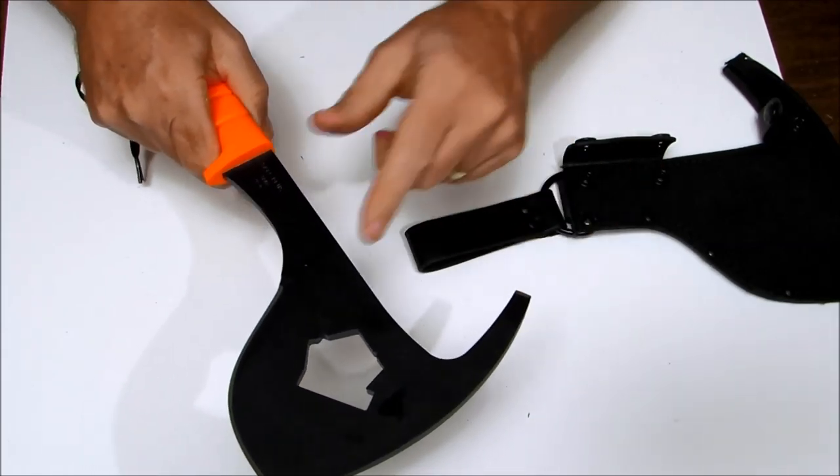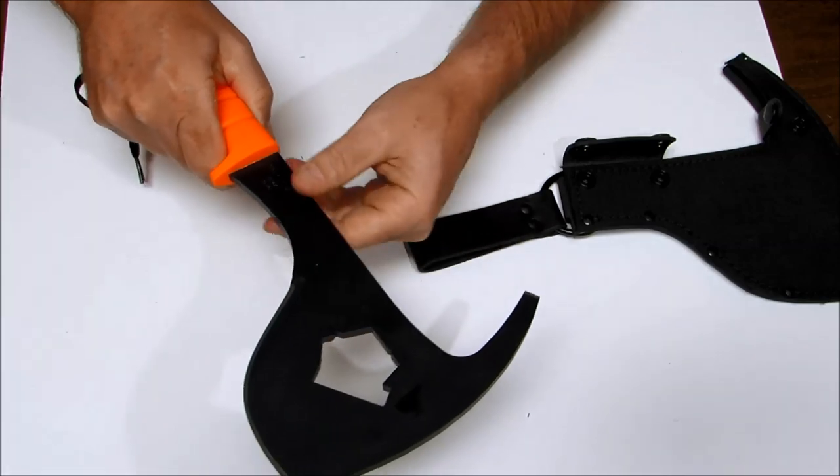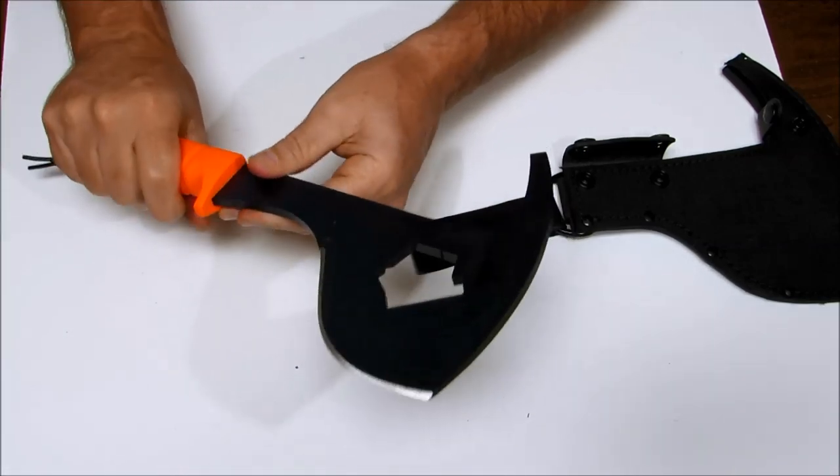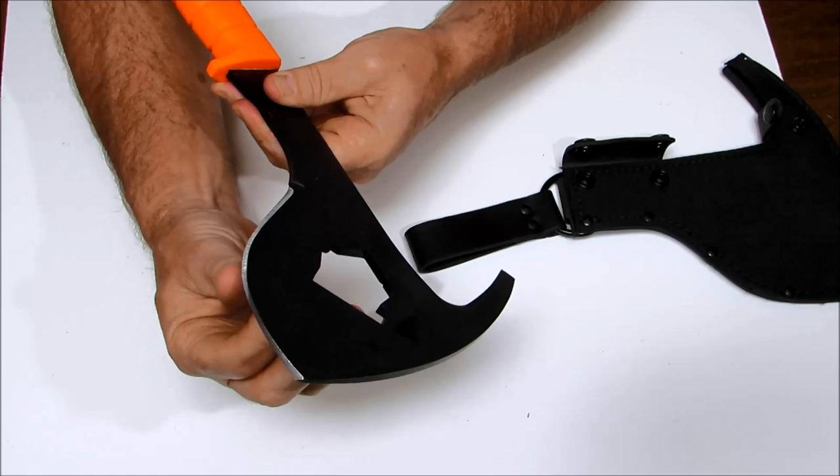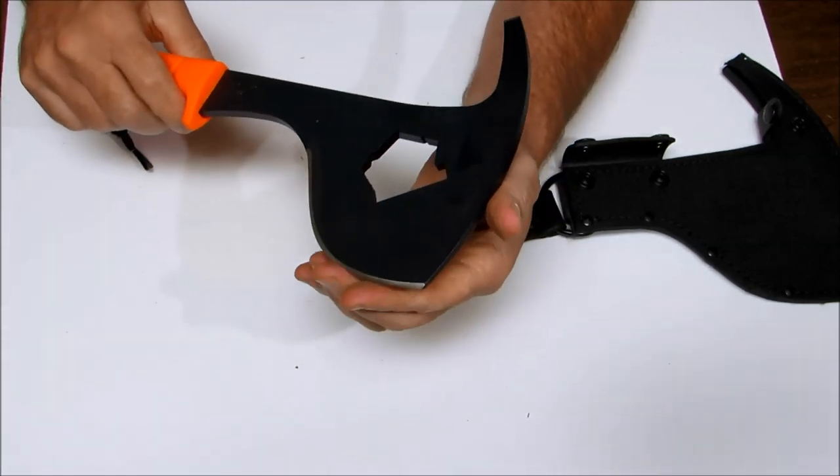You have a wrecking spike on this end and you have a wrench that you can use to open and close fire hydrant valves. You've got a good sharp cutting edge there.